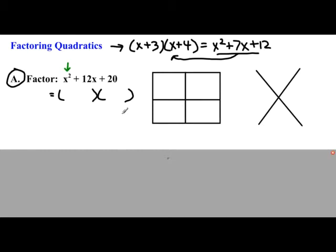So here's how the technique works. Whatever the x squared term is, you're going to go ahead and put that in the bottom left corner. And whatever the number is, you're going to go ahead and put that in the right top corner.